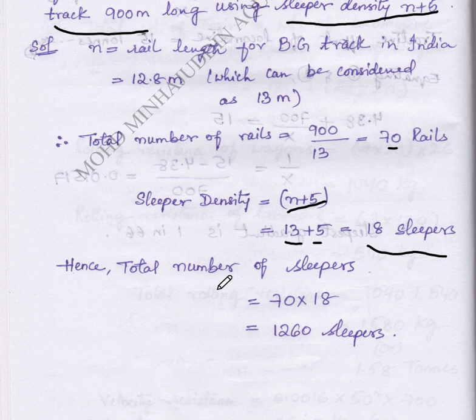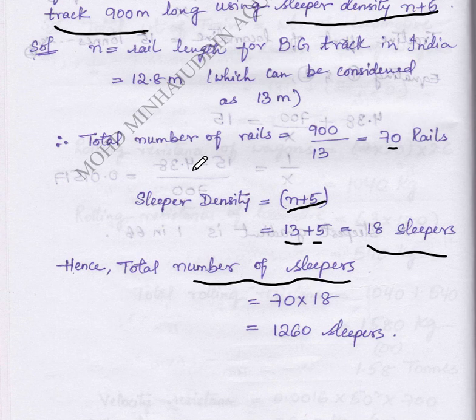Therefore total number of sleepers equals sleeper density into total number of rails. We will get number of sleepers as 1260.